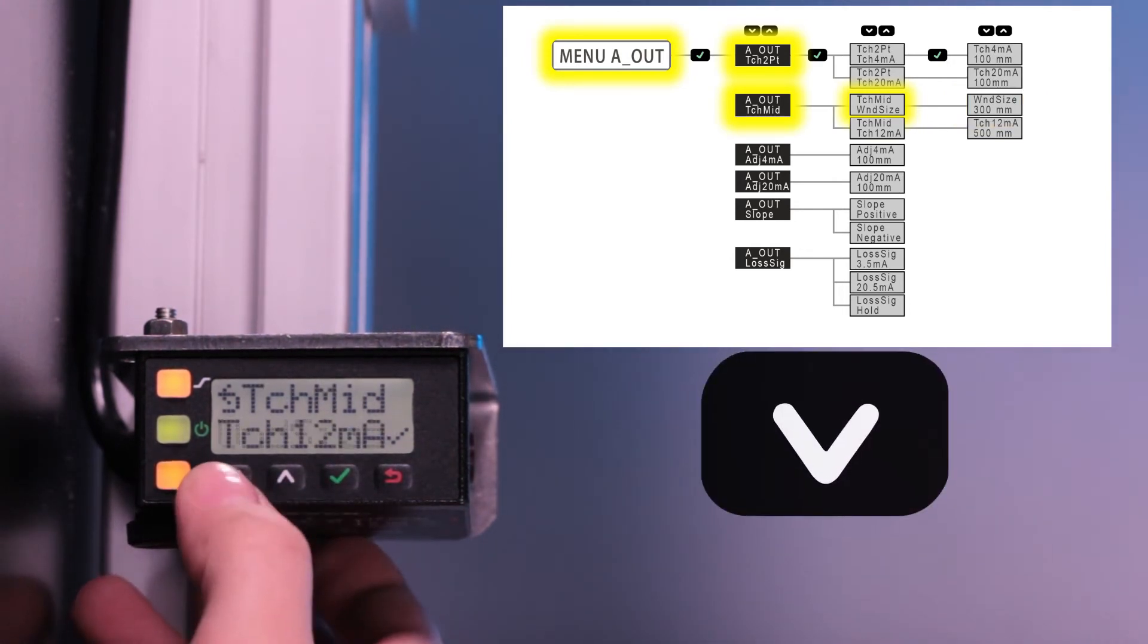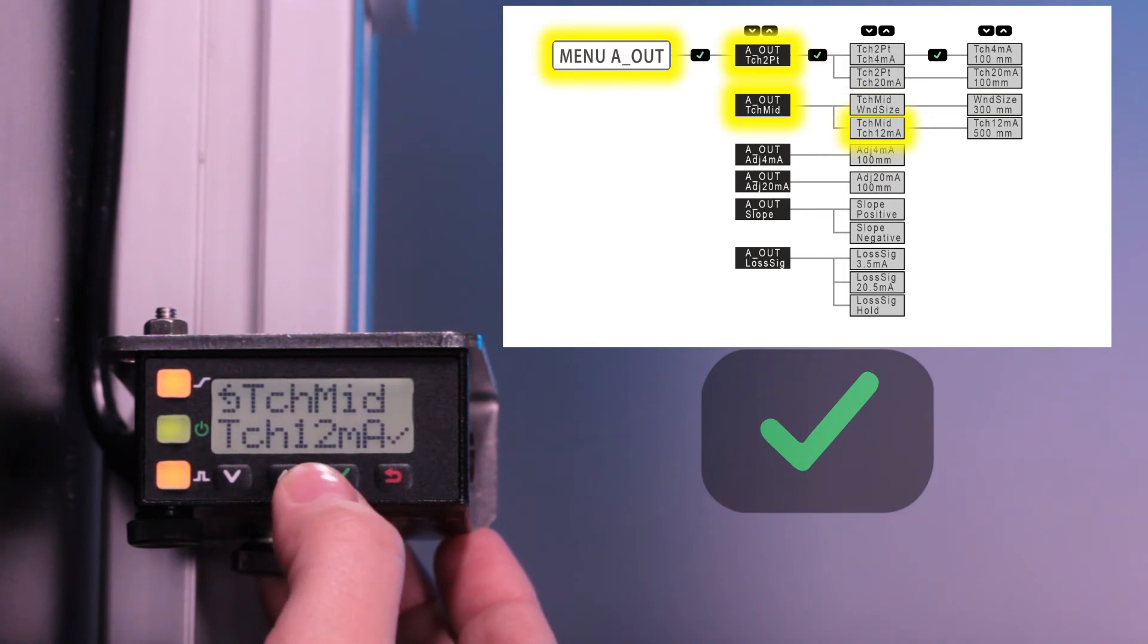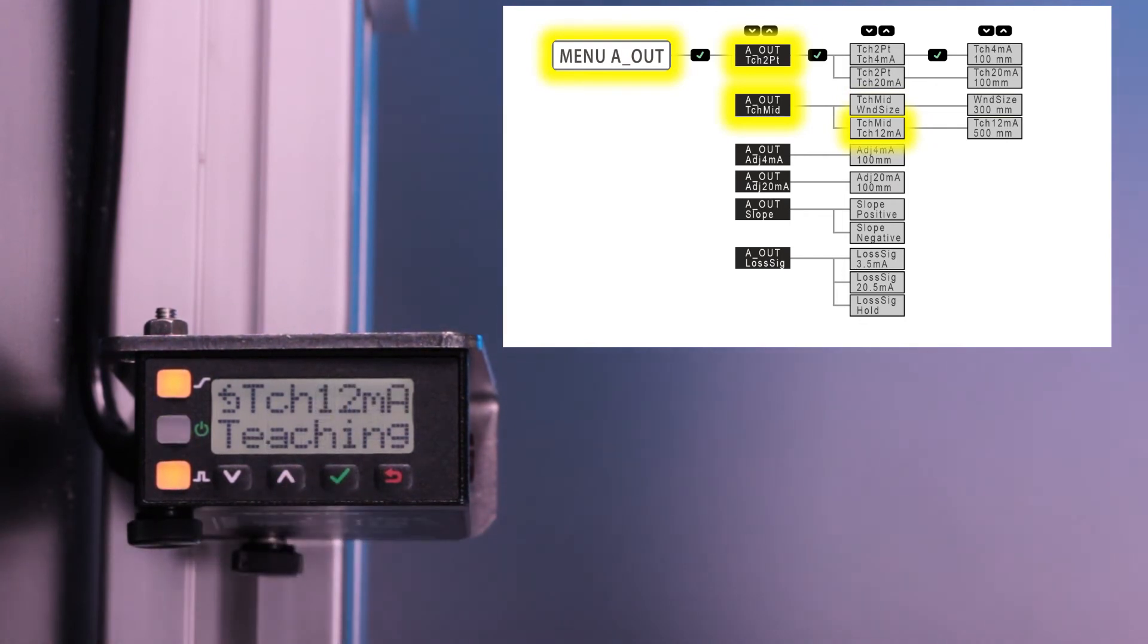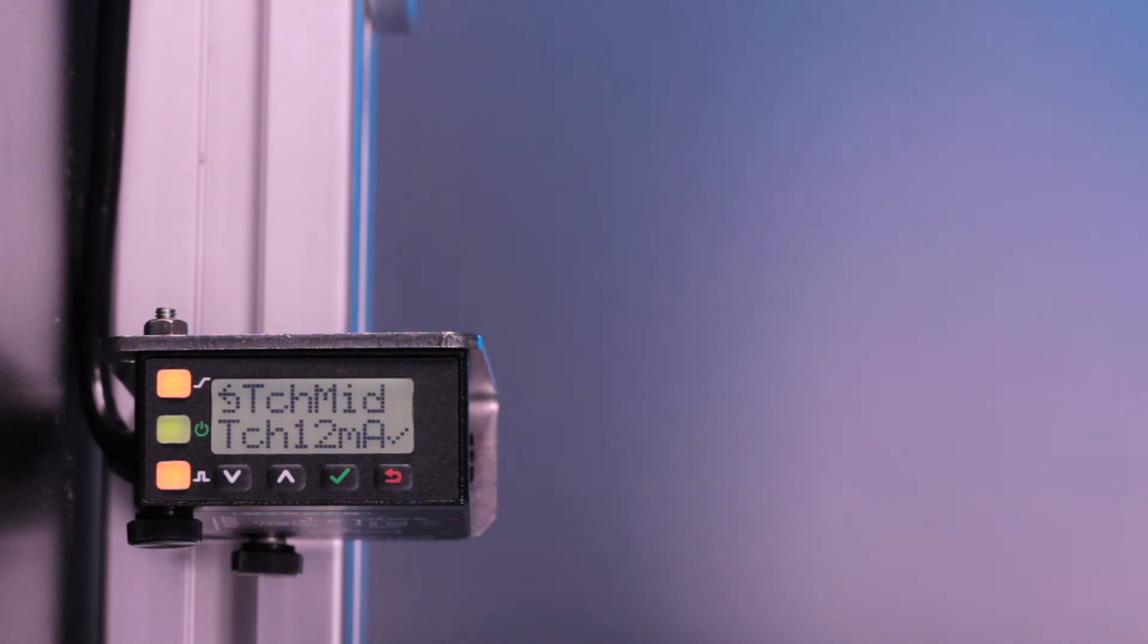Next, click down to teach 12mA. Clicking enter will now start teaching the midpoint of the analog output window. After a successful teach, the sensor will flash the value taught as the middle of the window.